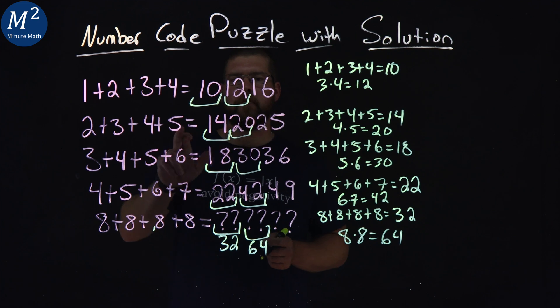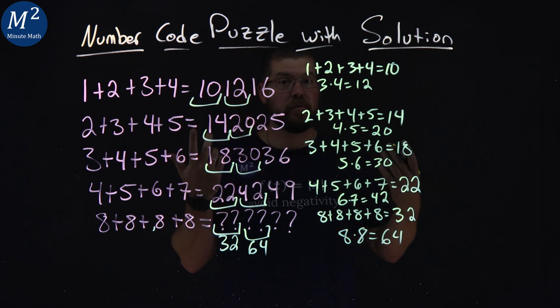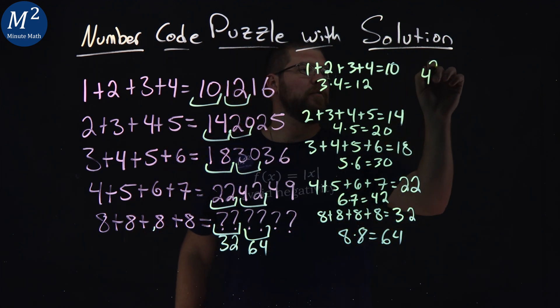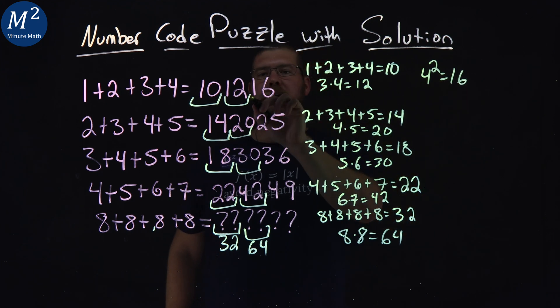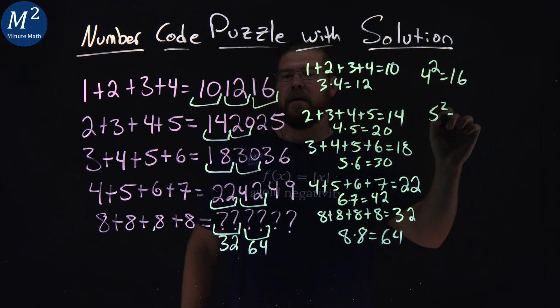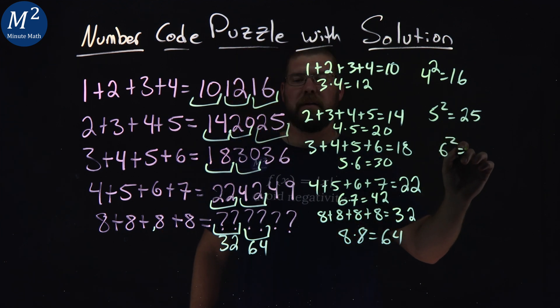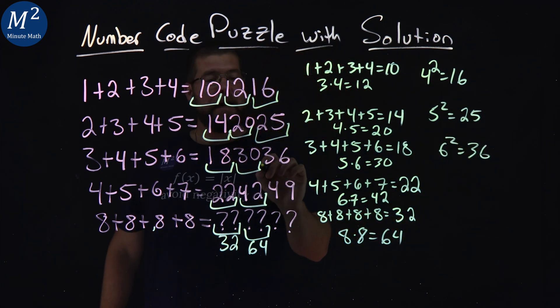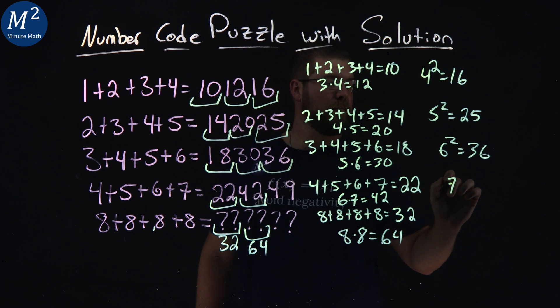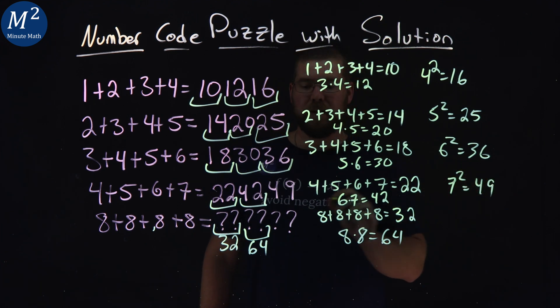4, 16, 5, 25, 6, 36. We're squaring here. So 4 squared is equal to 16. 5 squared is a 25. 6 squared is a 36. 7 squared equals a 49.